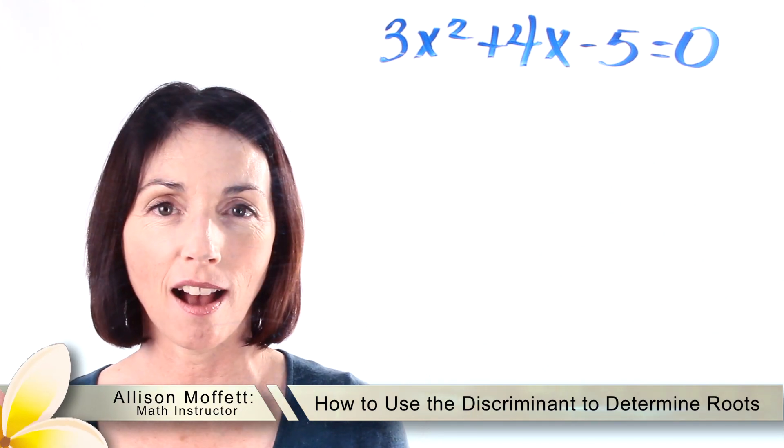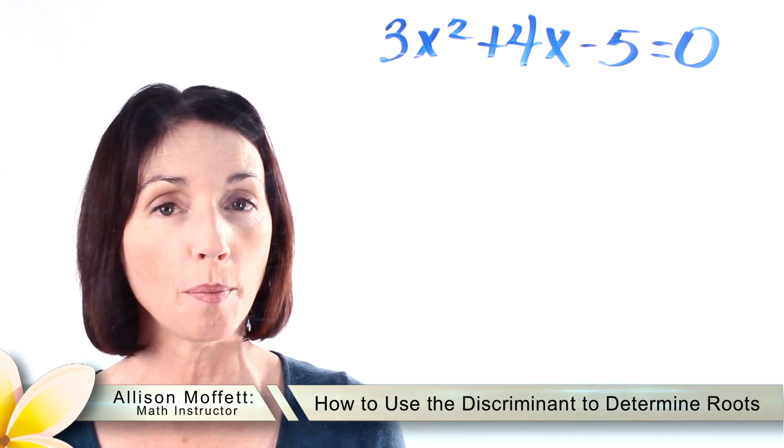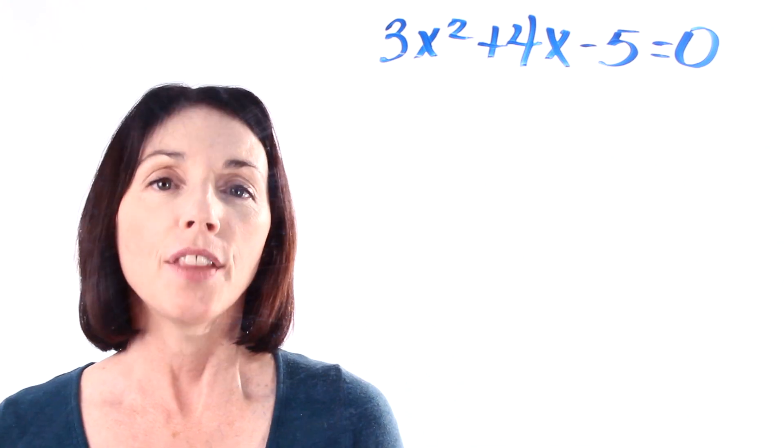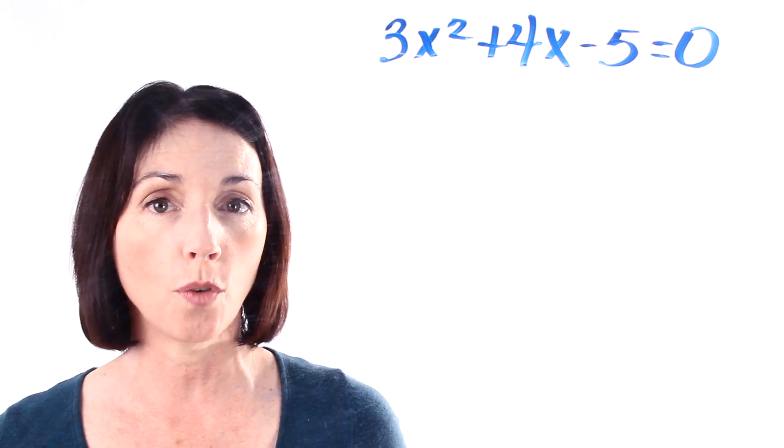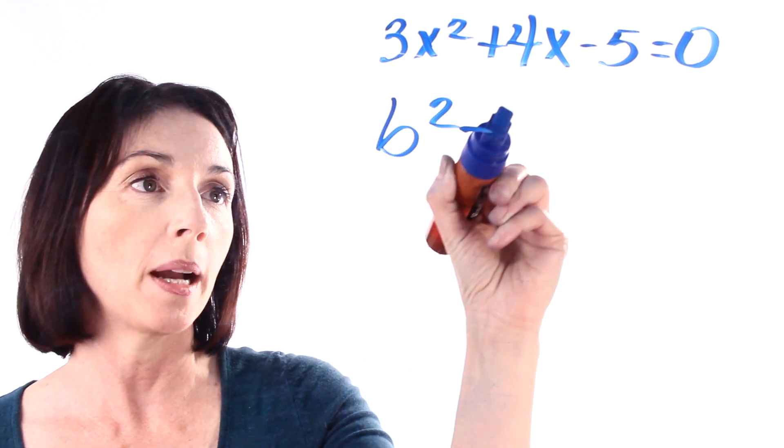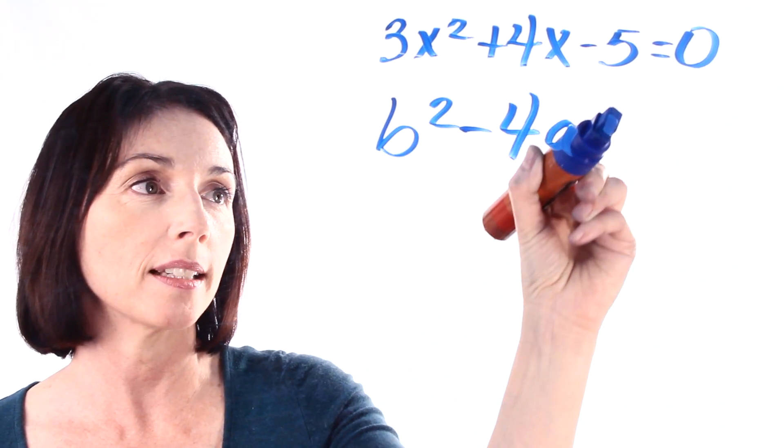Hey, it's Allison from Mahalo.com and today we're going to use the discriminant to determine what kind of roots we have for this quadratic equation. The discriminant is the part of the quadratic formula that appears under the square root symbol. It's b squared minus 4 times a times c.